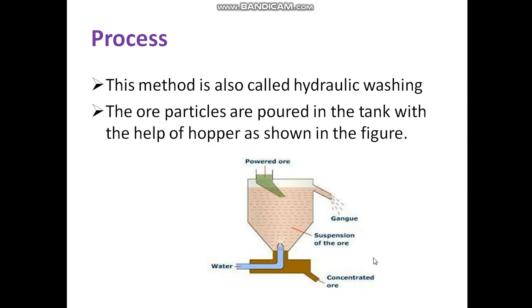This is the suspension of the ore, and this is the outlet for the concentrated ore. The lighter ore particles — that is the gangue — can be removed from the upper part. This was a simple diagram for the gravity separation method.